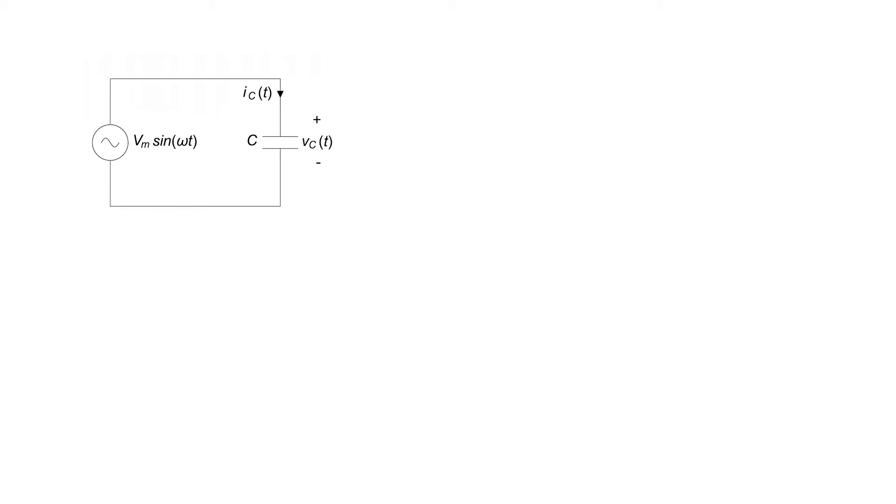We've got an AC voltage source here in parallel with a capacitor. Because the capacitor is in parallel with a voltage source, the voltages are just equal. We might recall that the current through a capacitor is just the capacitance times the time derivative of the voltage. Let's find the current flowing into this particular capacitor.